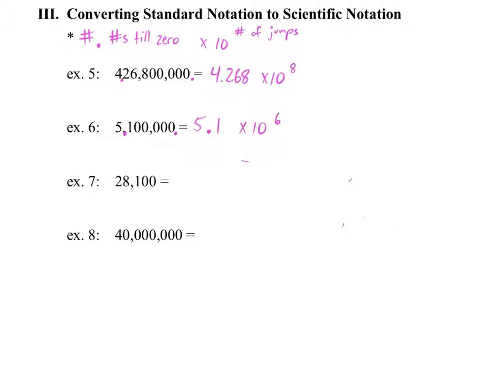My next one then, we write it as 2.81 times 10 to the fourth. Good call, Lily. And if you're struggling with these, write in your decimal points. We start here at the end. We want to go to here, so we have 1, 2, 3, and 4.